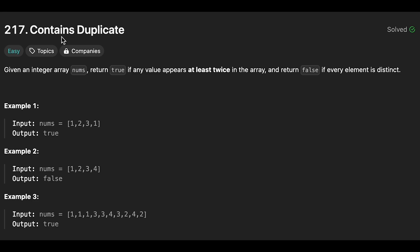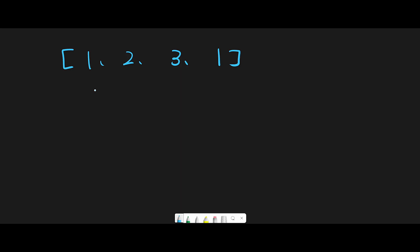Today we are going to solve the LeetCode question 'Contains Duplicate'. Let me explain with this example: [1, 2, 3, 1]. I'll show you three ways to solve this question. But before that, let's think about the brute force way. In the brute force way, I fix index zero as an outer loop and then iterate through other numbers in the inner loop — one versus two, they are different, and one versus three, they are different, and one versus one, so we find a duplicate.